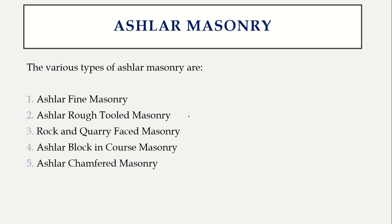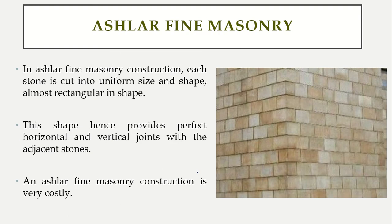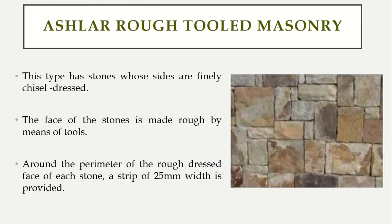Ashlar masonry is classified into five types: ashlar fine, ashlar rough tool, rock and quarry faced, ashlar block in course, and ashlar chamfered. The first is ashlar fine masonry — since ashlar means dressed stone, here the stones are of uniform size and uniform shape, almost rectangular. This construction provides proper horizontal and vertical joints and looks very perfect, but it is costly because obtaining all stones of exact size and shape requires more money.